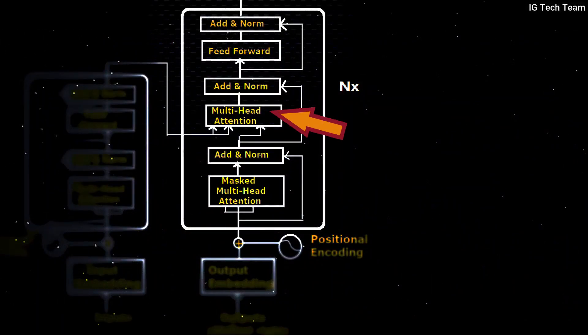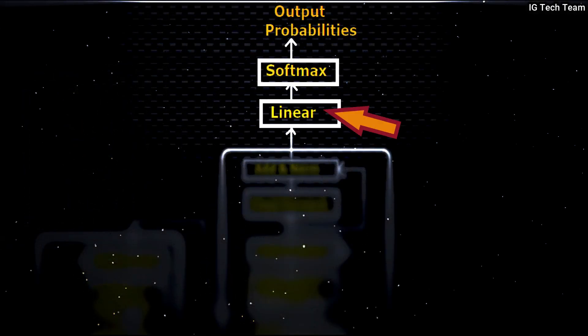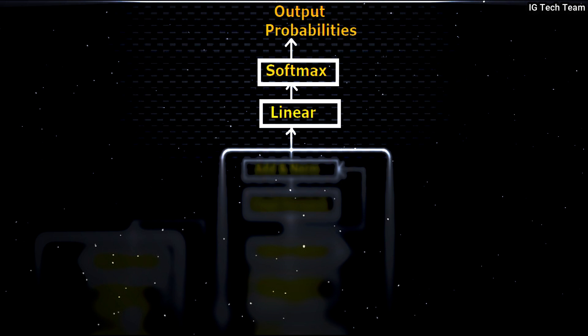Next we have multi-head attention where results from the encoder block come into this layer, so we call it encoder-decoder attention block. The output from this block passes to the feed forward layer, which converts vectors to a form acceptable by another decoder or linear layer. This linear layer is also a feed forward connection network used to expand the dimension into the number of words in the targeted output. The softmax function then maps the output based on probability, and this is how our model gets trained.